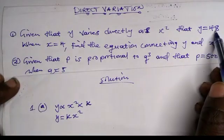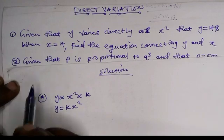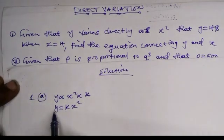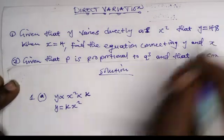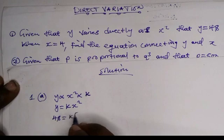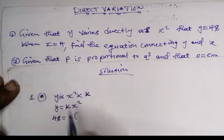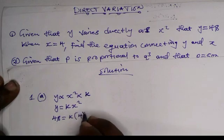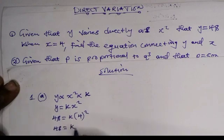Y is 48 and x is 4. Let's substitute these values. Where y is, we have 48 equals k times x squared. For x squared, we have 4 squared, which gives us 48 equals k times 16.